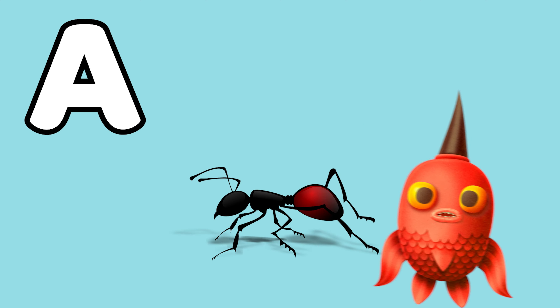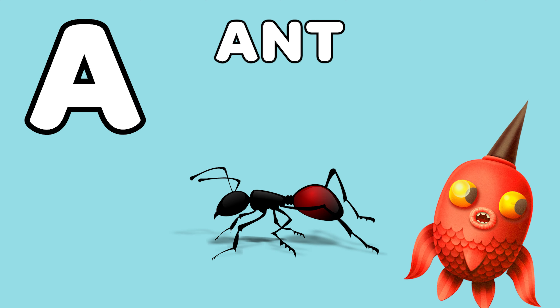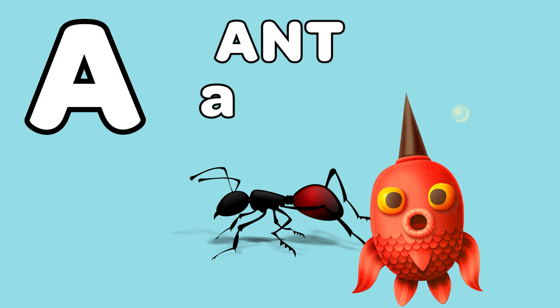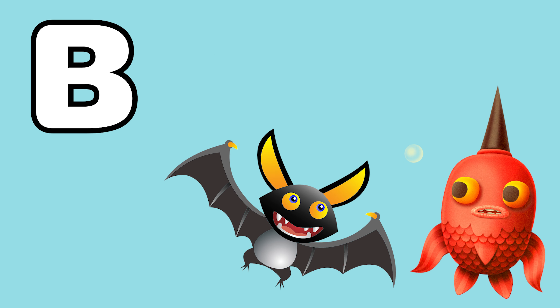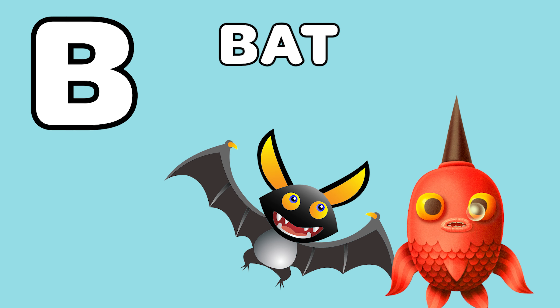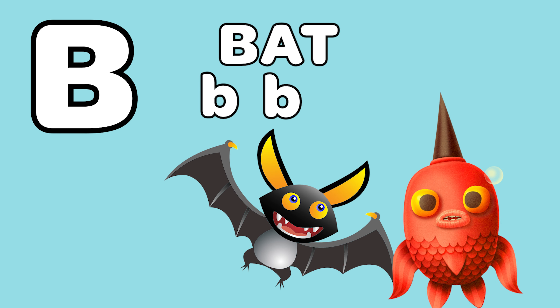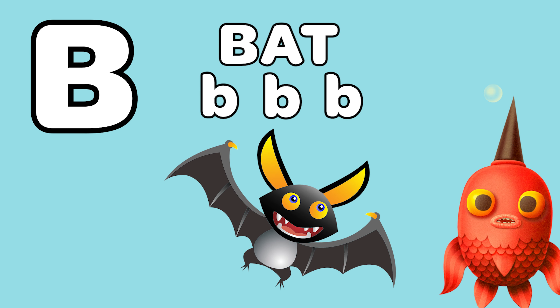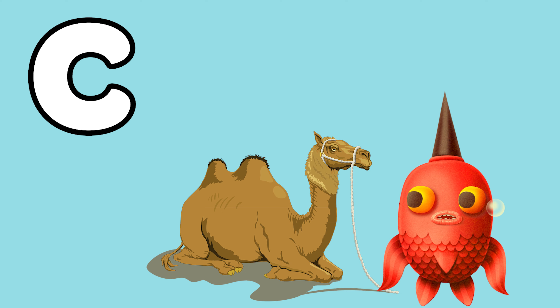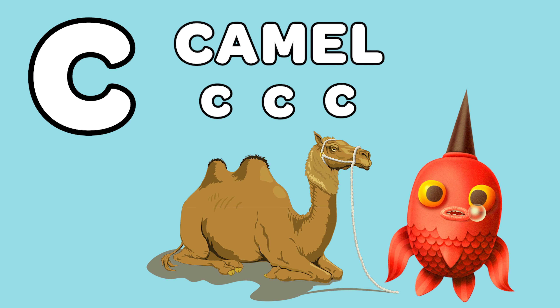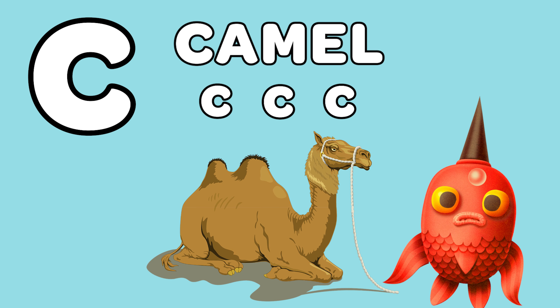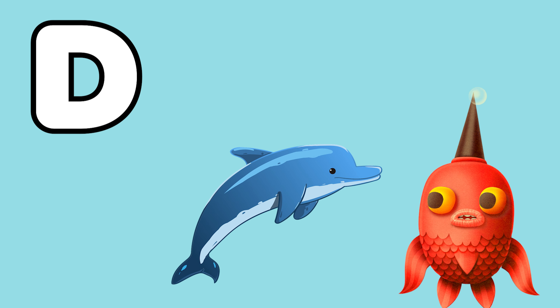Here we go! A is for Ant. B is for Bat. C is for Camel. D is for Dolphin.